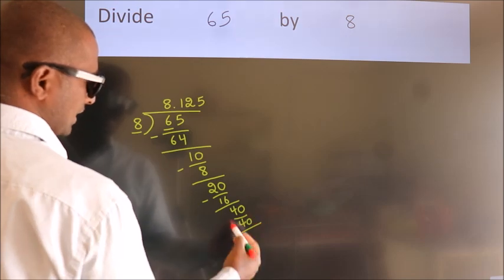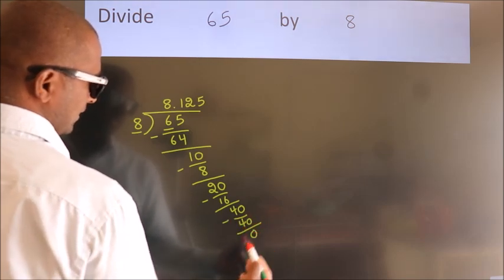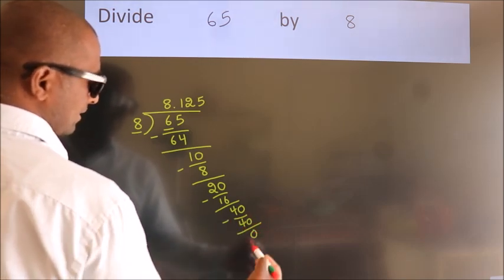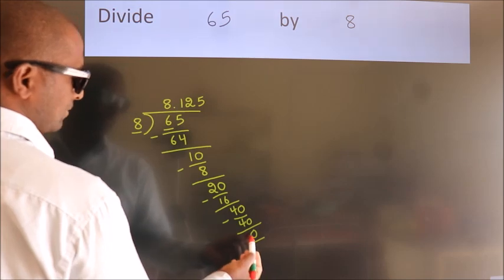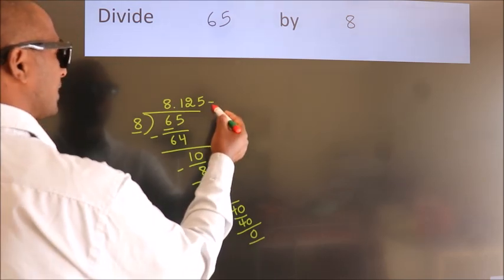Now we subtract. We get 0. Here we got remainder 0, so this is our quotient.